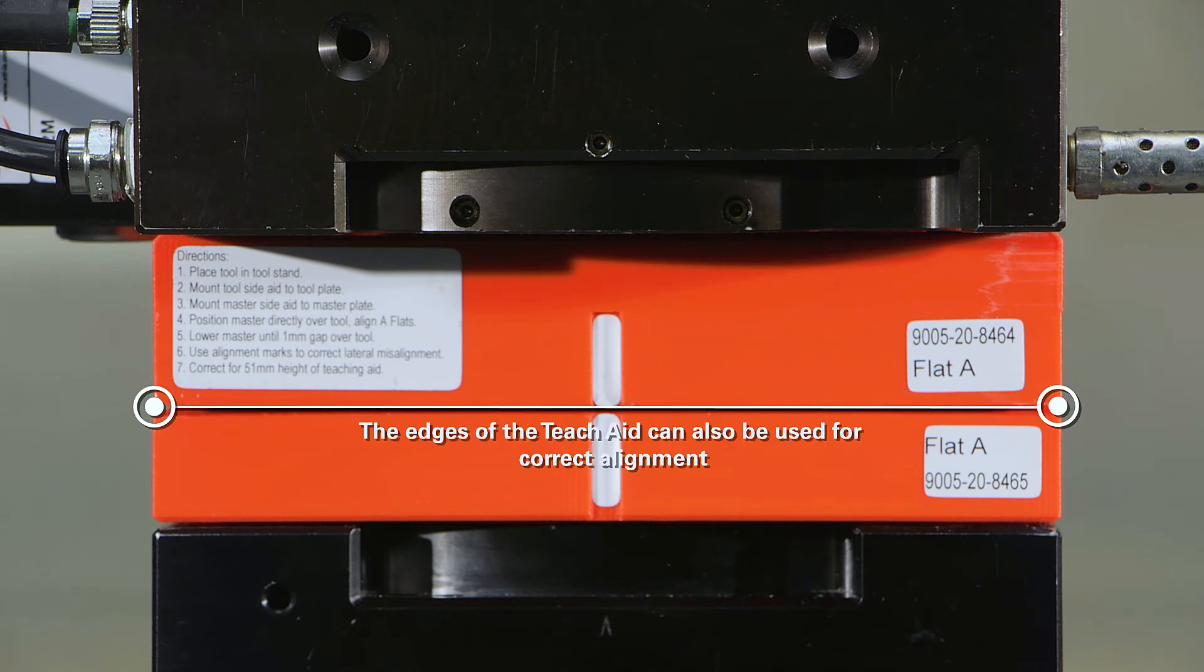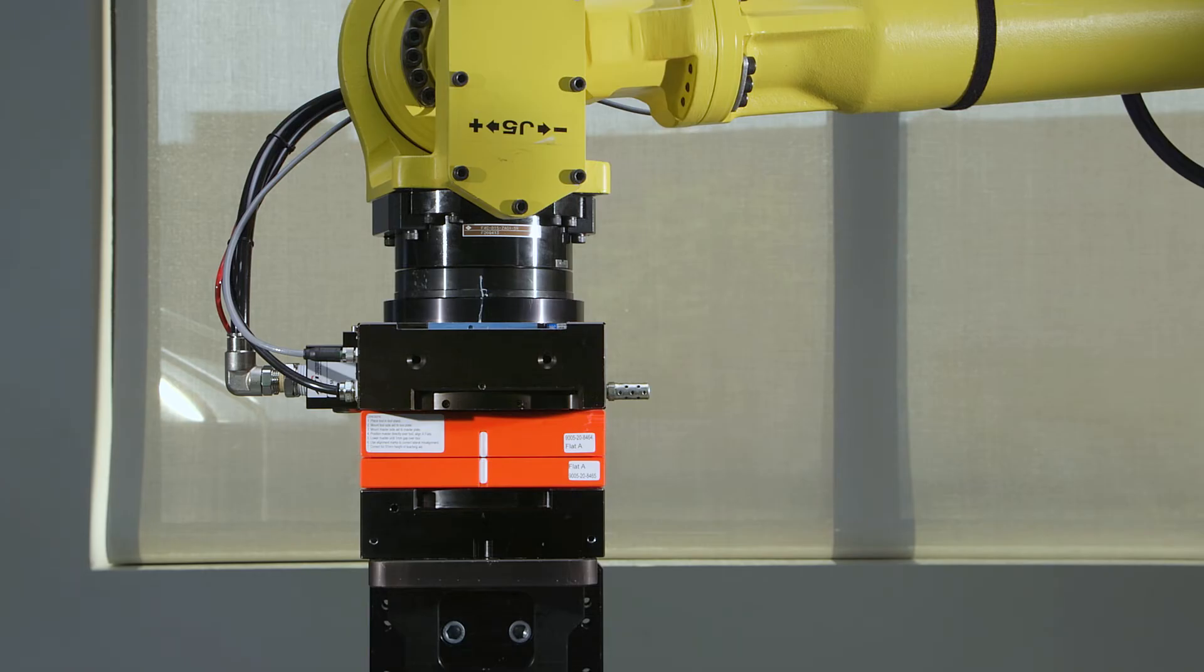You can also use the edge of the T-Jade for alignment, and feeler gauges to judge angular alignment. Record the robot coordinates.